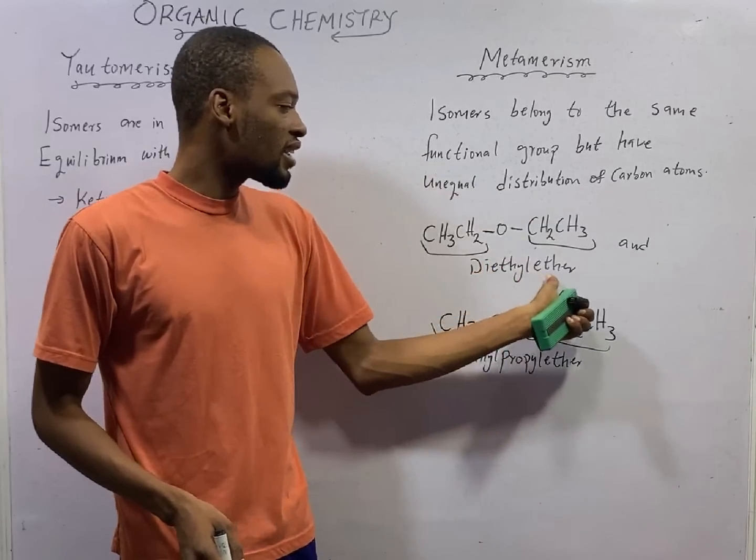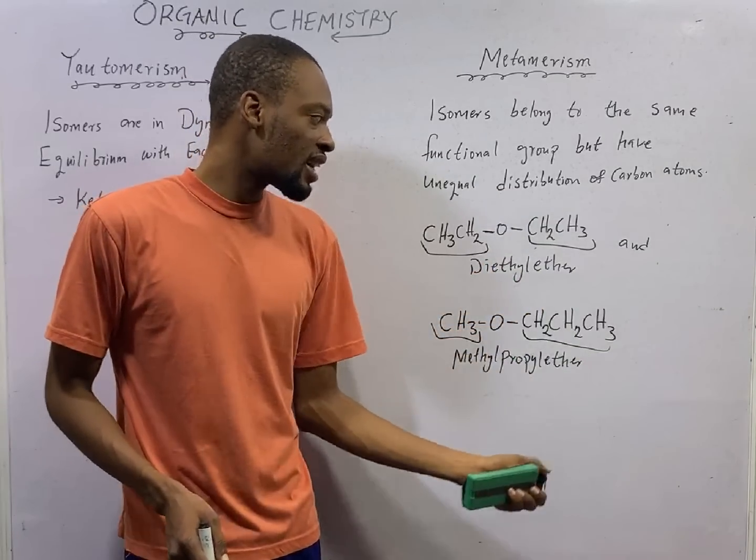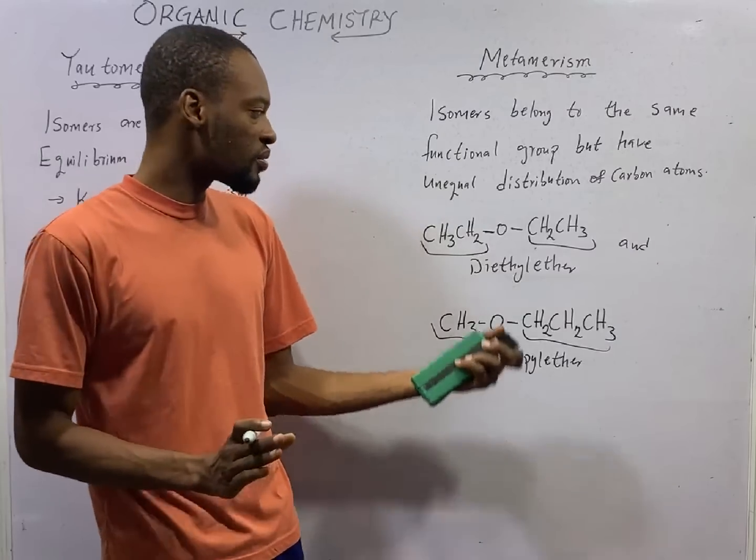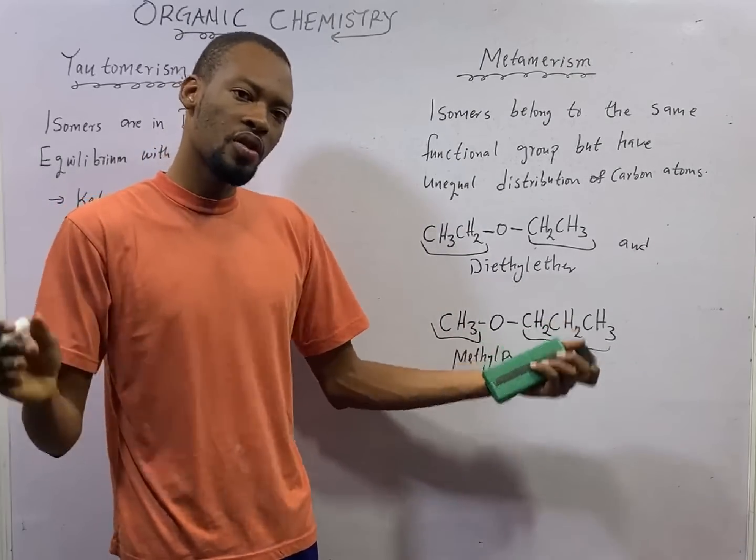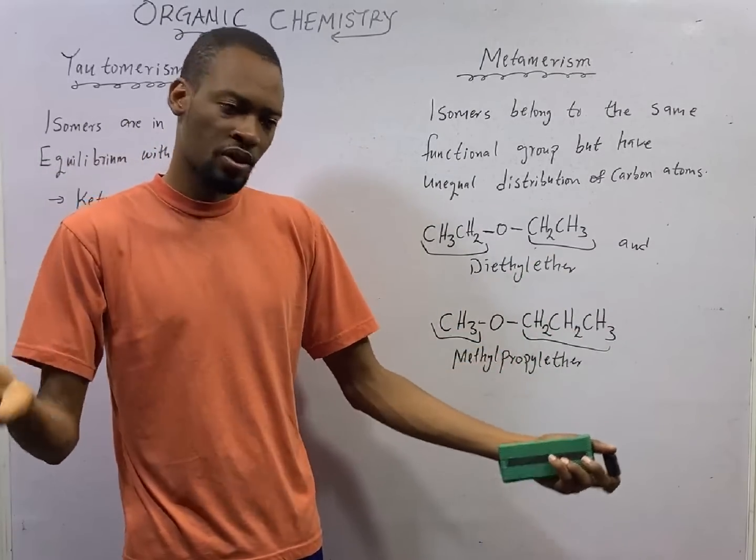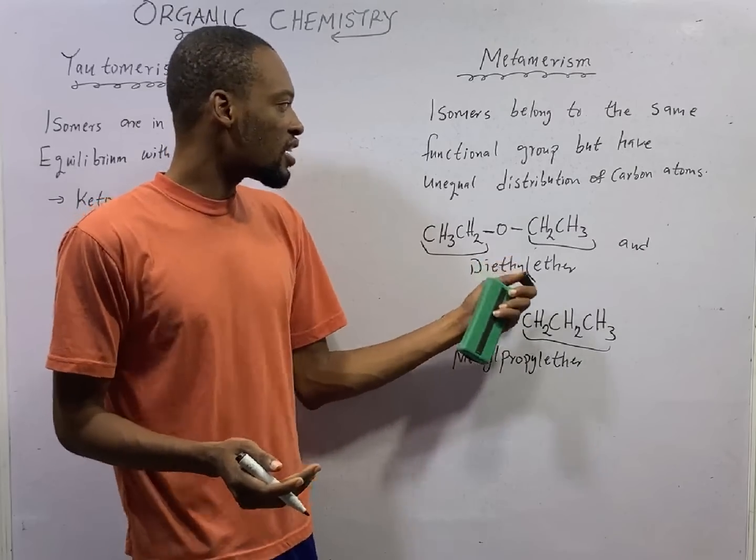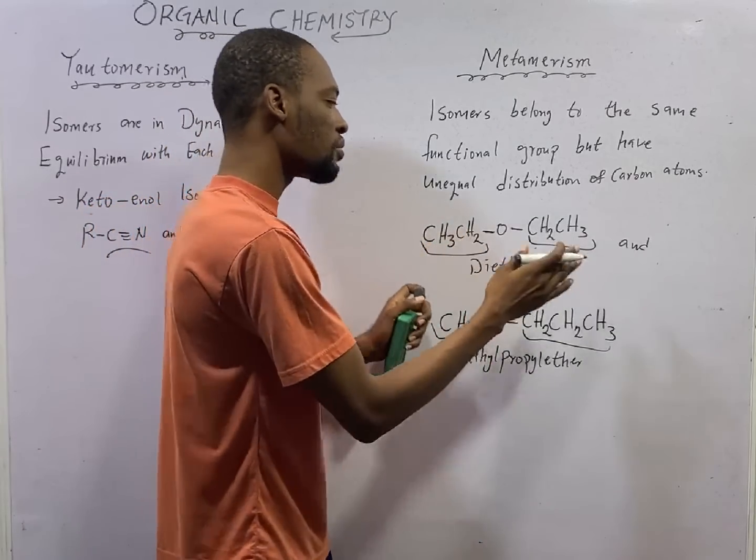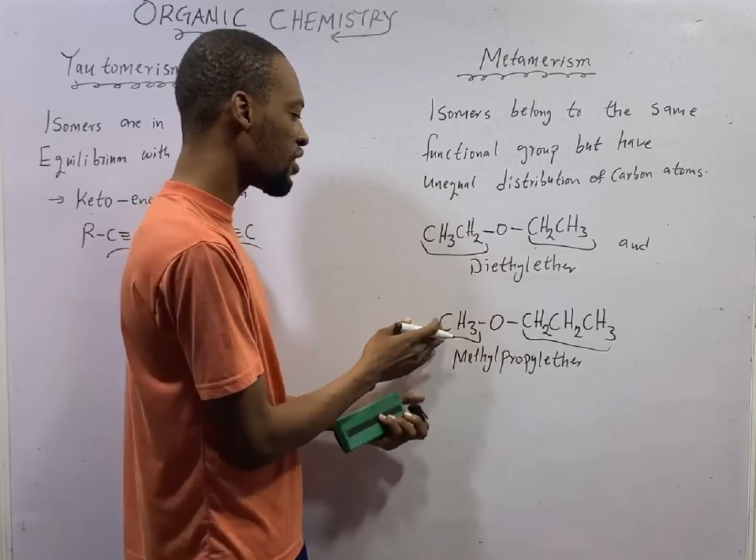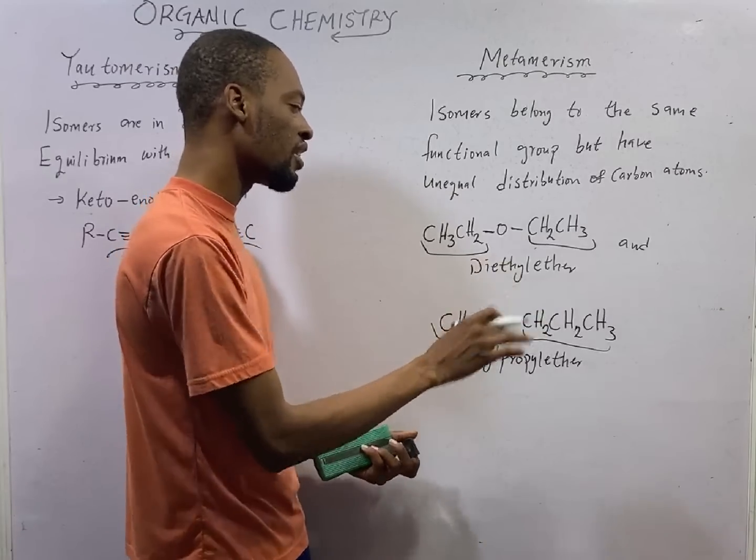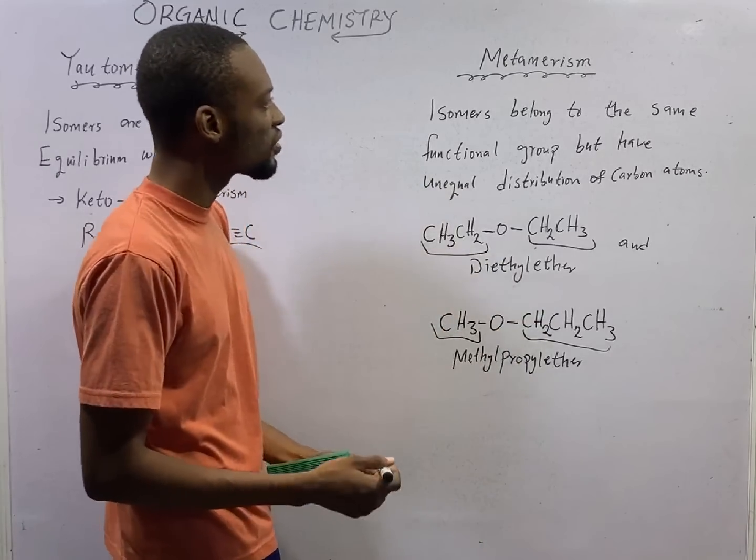So diethyl ether and methyl propyl ether, they only differ based on the distribution of carbon along the functional group. For here, there is equal two carbons here, two here, distribution, but for here just one carbon at the left and three at the right. That is what makes Metamerism.